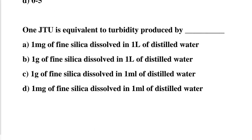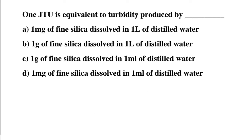Next question: 1 JTU is equivalent to turbidity produced by option A: 1 milligram of fine silica dissolved in 1 liter of distilled water, option B: 1 gram of fine silica dissolved in 1 liter of distilled water, option C: 1 gram of fine silica dissolved in 1 ml of distilled water, option D: 1 milligram of fine silica dissolved in 1 ml of distilled water. The correct answer is option A.